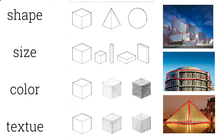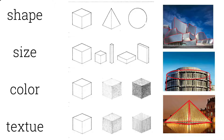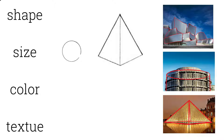Shape is the outline of the form. It can be a pyramid, a sphere, or even an irregular form. Size is the dimensions of the form — the length, width, and depth — and also the scale of the form comparing to other forms. So this sphere is small comparing to the pyramid, for example.